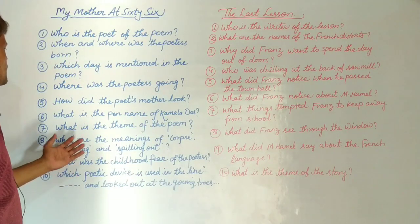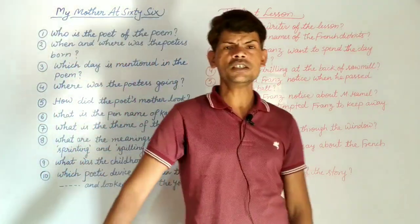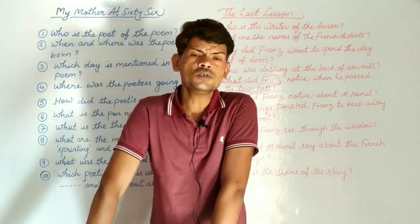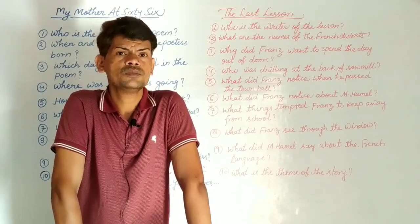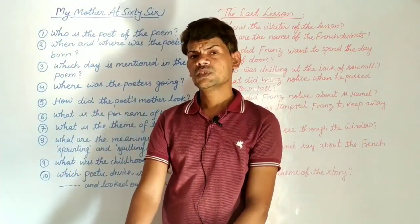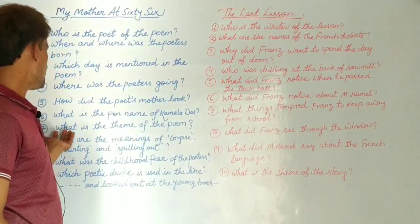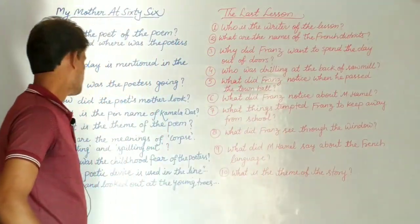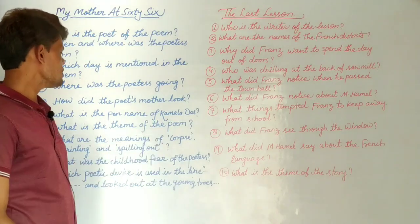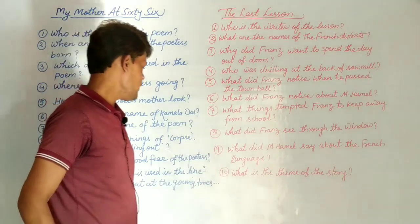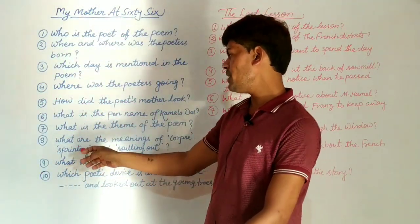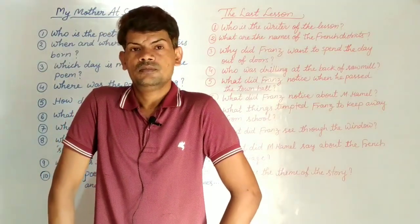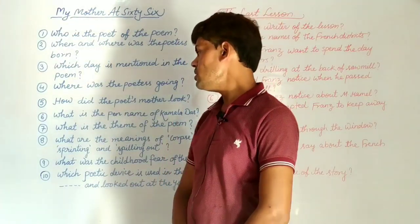Question number 7: What is the theme of the poem? My dear students, during the time of explaining the poem, when I was telling you about the summary, I told you the theme of the poem. So you have to answer question number 7: What is the theme of the poem? The message. Your next question number 8: What are the meanings of the words — first, 'corpse'; second, 'sprinting'; and third, 'spilling out'? Write the meanings of these words.